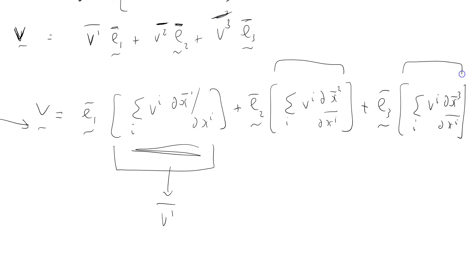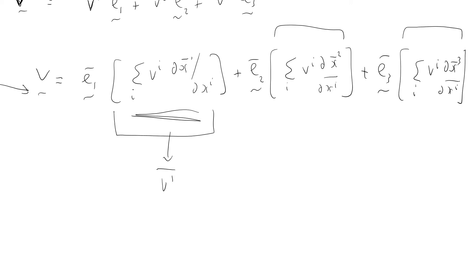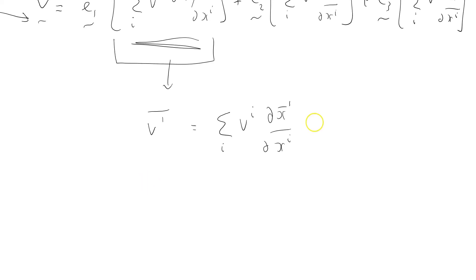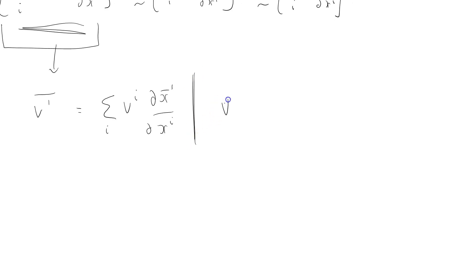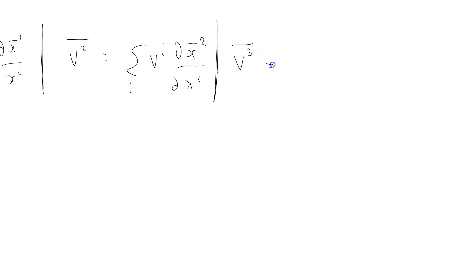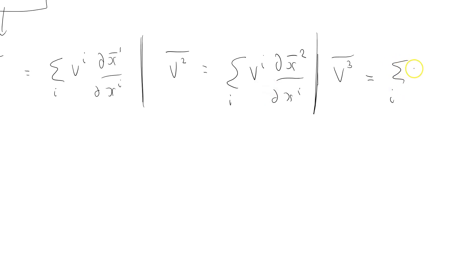So we can just equate the terms bit by bit. That says v1 bar equals sigma over i, vi dx bar one by dx i. And similarly, v2 bar equals sigma over i, vi dx bar two by dx i. And the final one: v3 bar equals sigma over i, vi dx bar three by dx i.